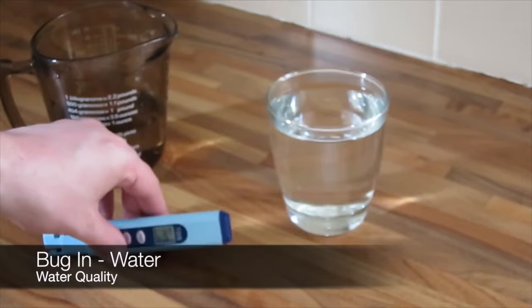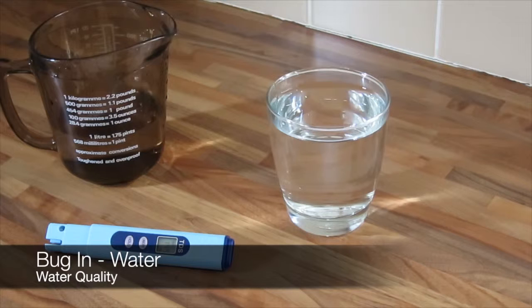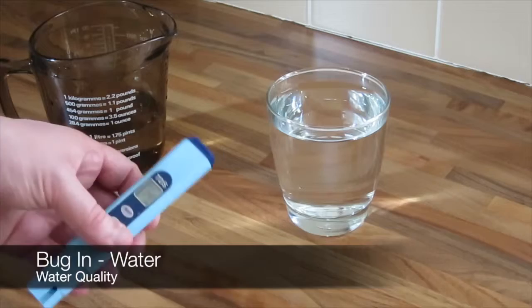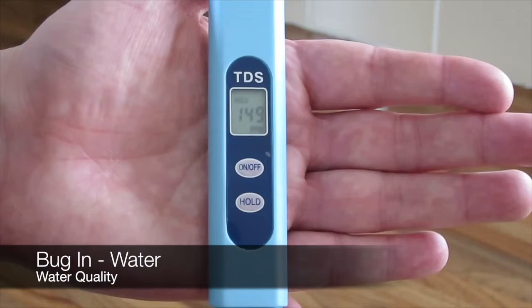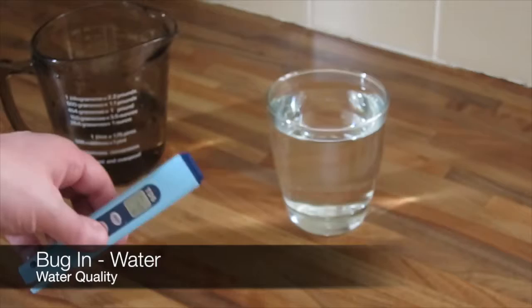This is obviously something to consider when you're bugging in: the quality of the water during stuff hits the fan. The treatment plants may not be working. The water that is coming out of your tap, even though it may look the same, you can't judge the quality of the water just by looking at it. Having things like this meter will give you at least an indication of what's going on with the water if you even suspect that anything is going wrong with it.